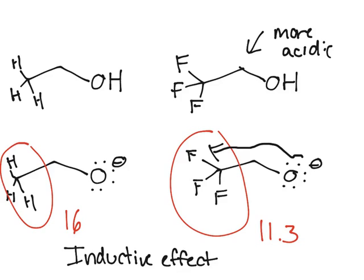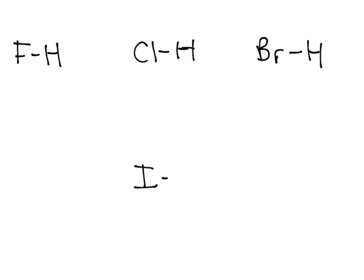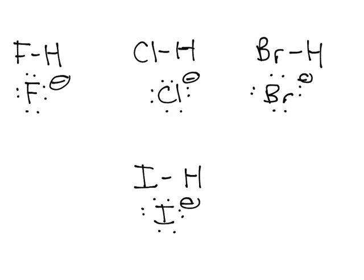And now next, we have the size of the atom. You'll see this when you're going down a group. Let's say you start off with F-H, Cl-H, Br-H, and I-H. The conjugate bases would look like F-, Cl-, Br-, and I-.